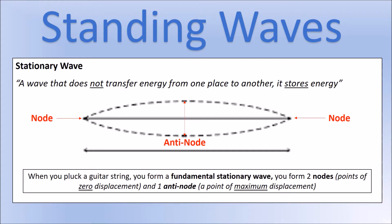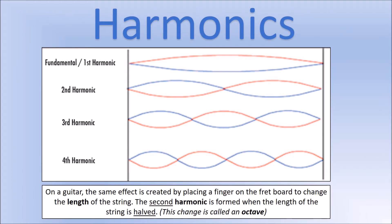The simplest stationary wave is called the fundamental. It has two nodes at either end — points where there is no displacement at any moment in time, like the two fixed ends of a guitar string. Between them we form an anti-node, which is the point of maximum displacement. The anti-node sits midway between the two nodes.